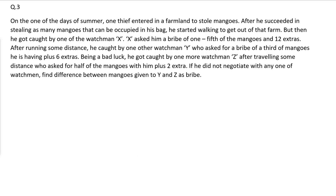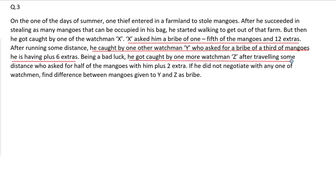On one of the days of the summer, one thief entered a farmland to steal mangoes. After he succeeded in stealing as many mangoes as could fit in his bag, he started walking to get out of the farm. But he got caught by watchman X, who asked for a bribe of one-fifth of the mangoes plus 12 extra. After running some distance, he was caught by watchman Y, who asked for one-third of the mangoes he had plus 6 extra. Being unlucky, he was caught by watchman Z, who asked for half of the mangoes plus 2 extra. He did not negotiate with any of the watchmen. Find the difference between the number of mangoes given to Y and Z as a bribe.